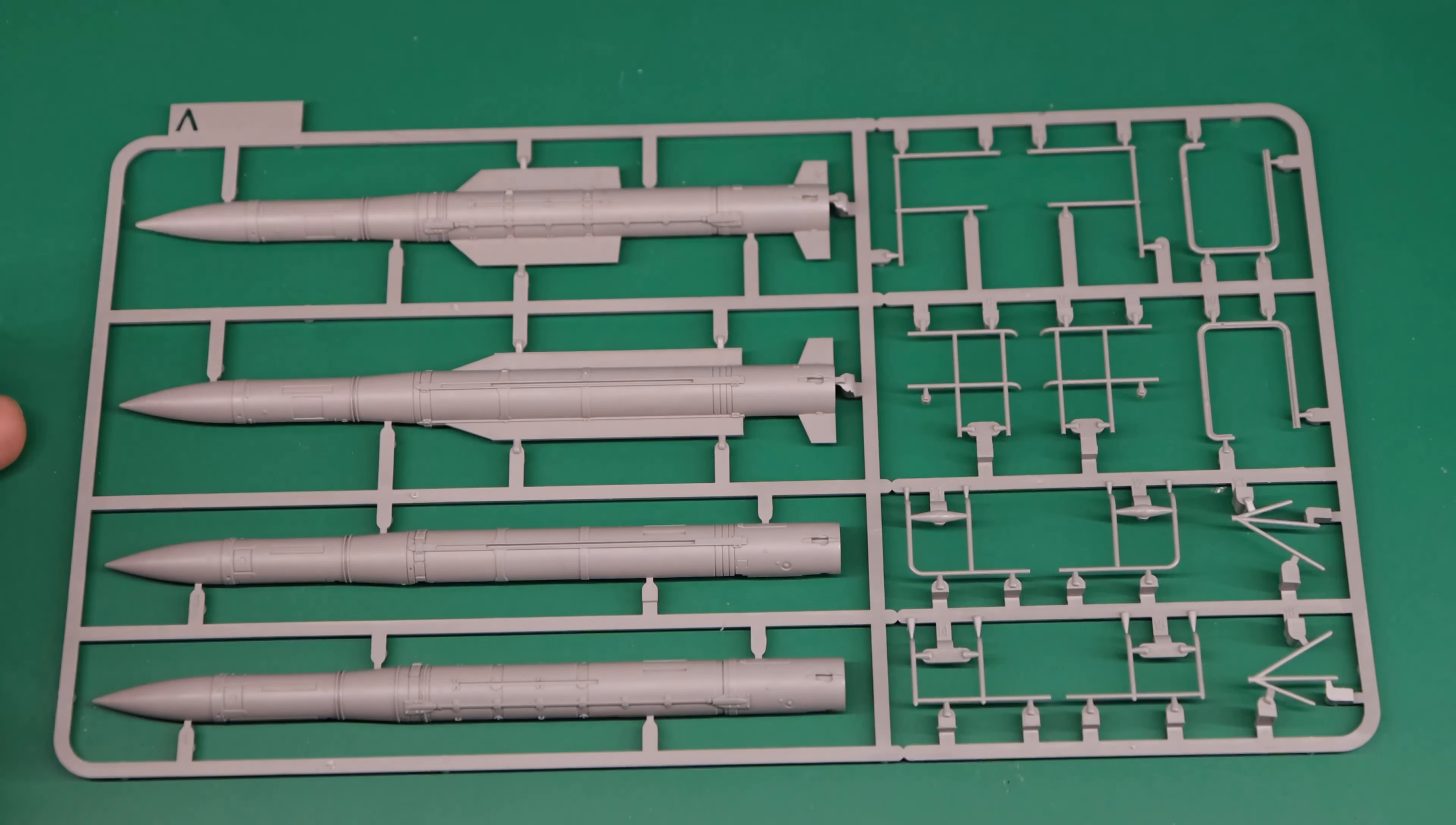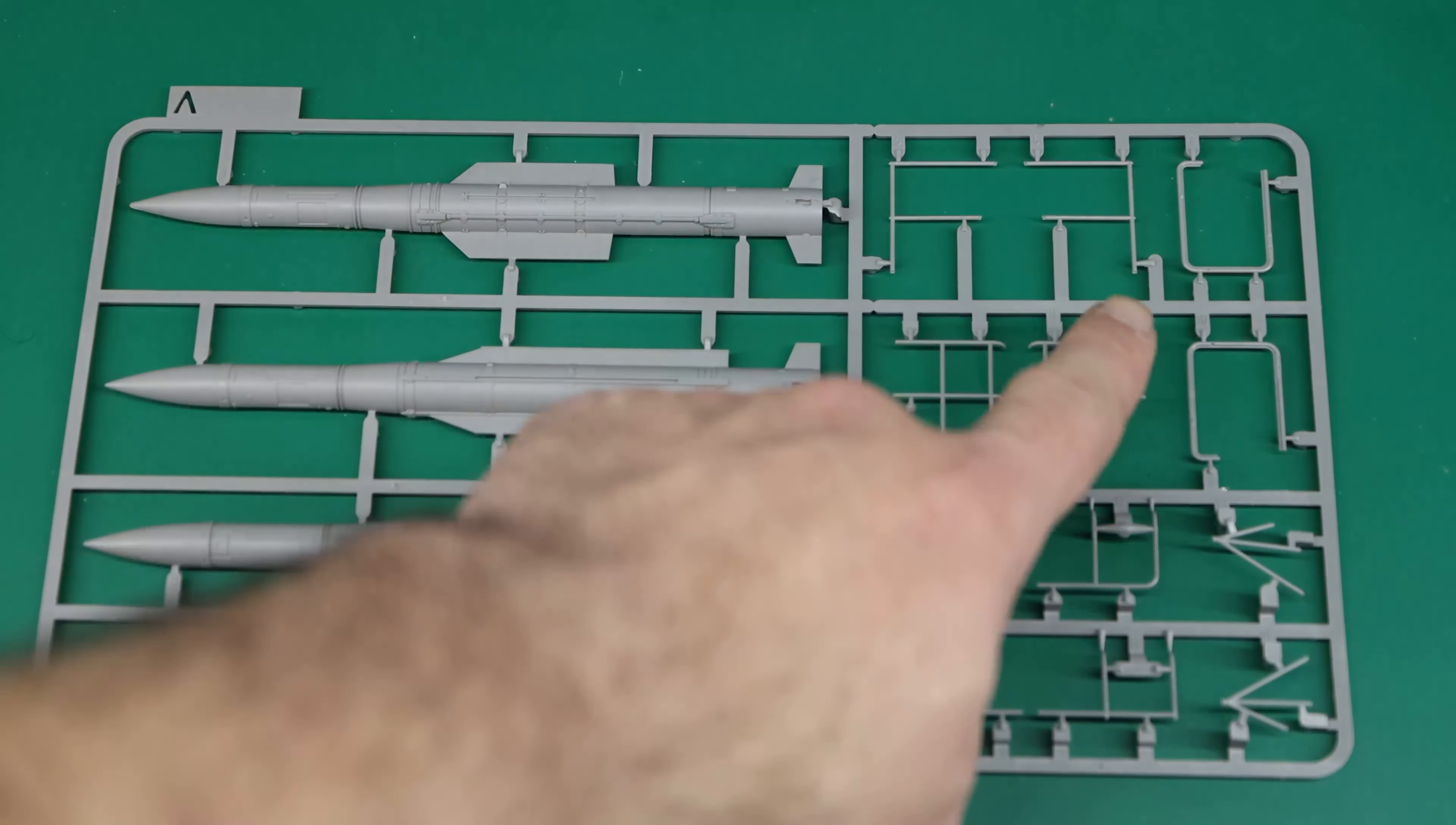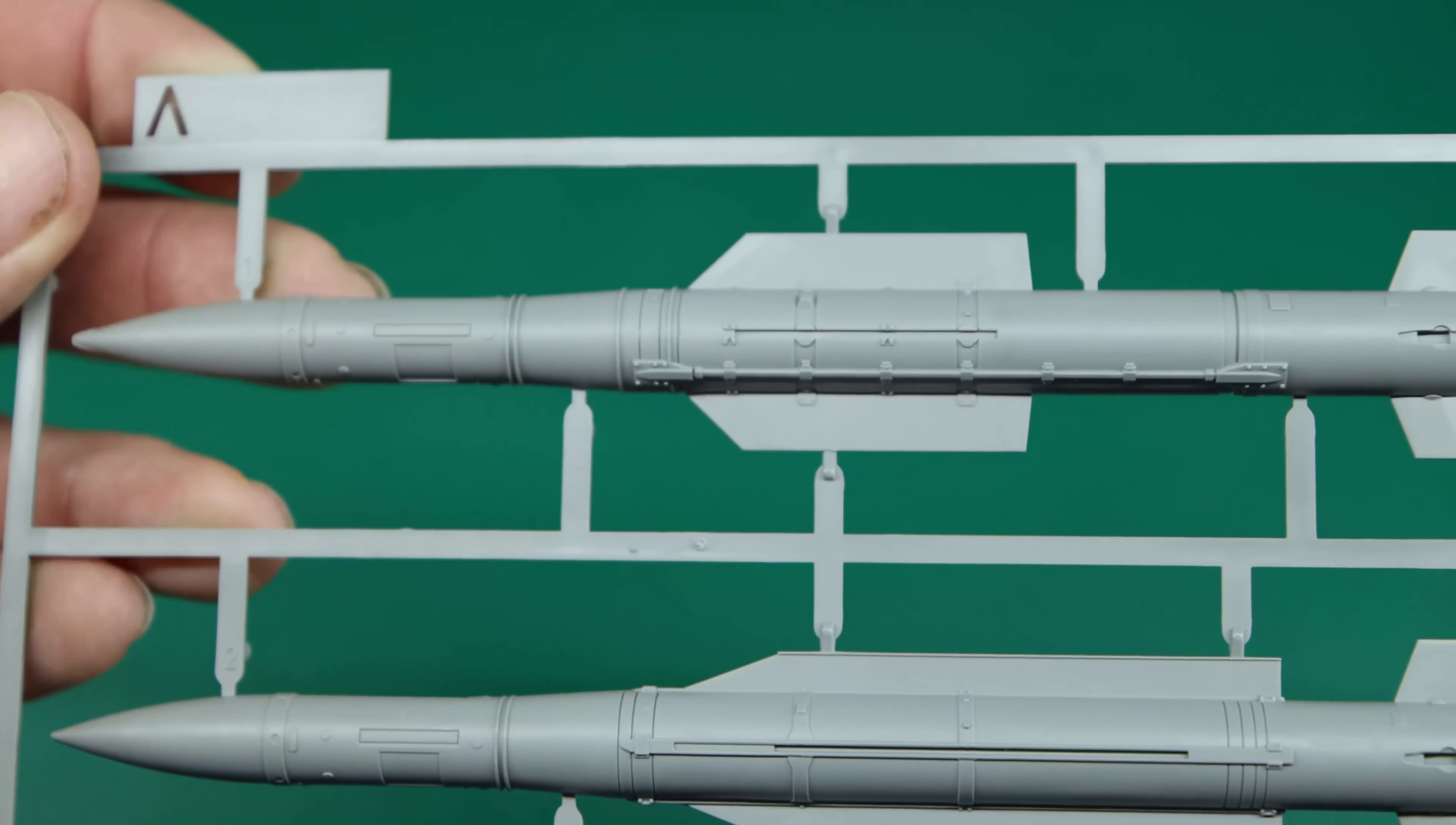Sprue A contains the two missile halves. As you can see they are split in half. There's the two different ones there so you can choose. There's the one here with the short, slightly shorter fins and the one with the longer fins, and then each of these map to those. Here you can see some of the handrails that go around the upper edge of the launcher. Not much detail but it looks pretty sharp what's there.